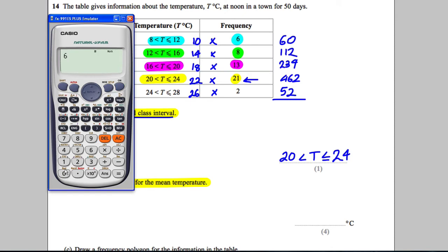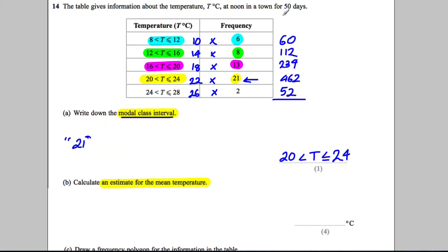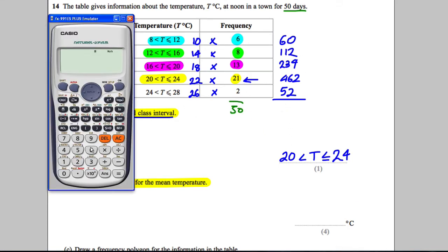So what we're going to do is add those up and divide by the total frequency. Now the total frequency should add to 50 days. 6 add 8 is 14. Add 13 is 27. Add 21 is going to be equal to 48. Add 2 is going to be equal to 50.